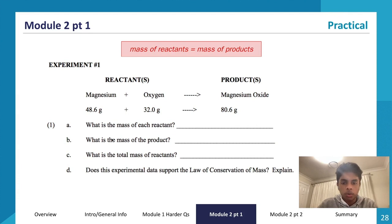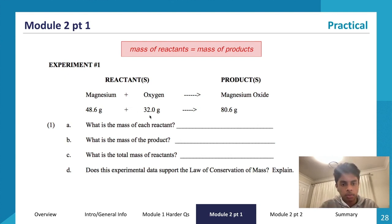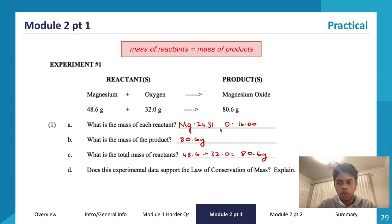The mass of the product is 80.6 grams. The total mass of the reactants is 48.6 plus 32.0, which gives 80.6 as well. If the mass of magnesium is 24.31 and we have 48.6 grams of magnesium, that means we have 2 Mg. Same with oxygen: if it's 16 and we have 32, we have O2. So we have 2Mg + O2 → 2MgO.